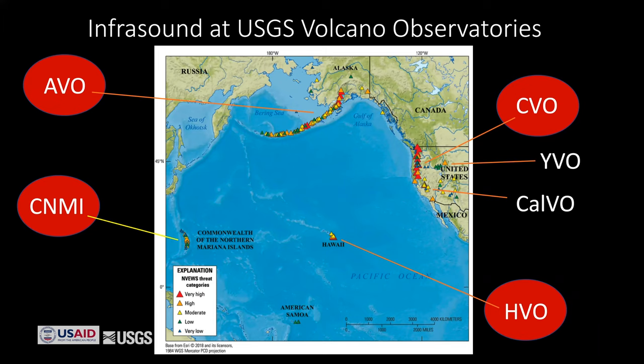In the United States, there are now four different volcano observatories where infrasound is being used. It's widely used in Alaska at the Alaskan Volcano Observatory. It's also being used in the Commonwealth of the Northern Mariana Islands, where we have an array. There are also arrays at the Cascade Volcano Observatory and at the Hawaiian Volcano Observatory, so infrasound is being pretty widely used across the USGS.